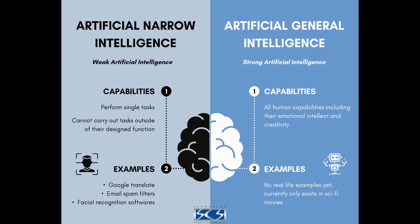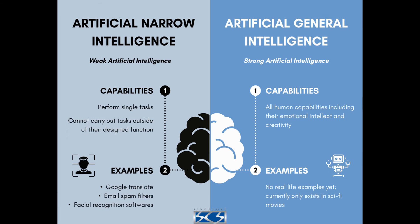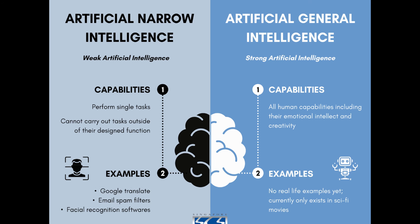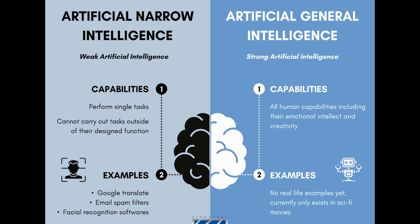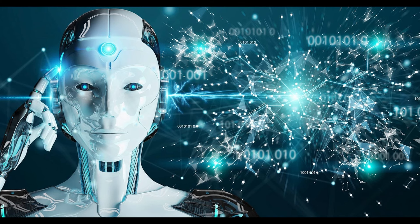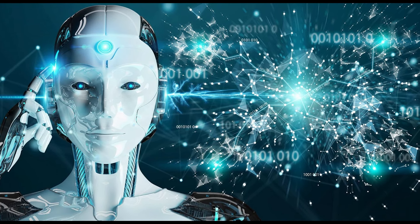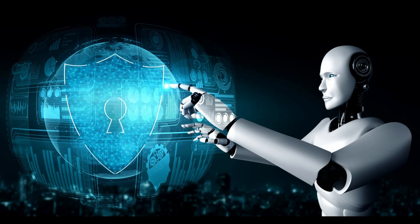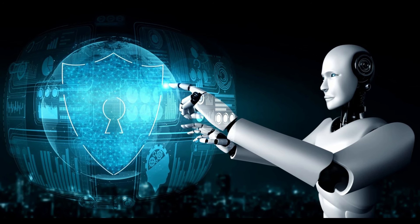AGI represents the hypothetical attainment of human-level intelligence by AI systems. AGI would possess the ability to understand natural language, learn from experience, and exhibit creativity and problem-solving skills. Research in AGI focuses on developing AI systems capable of generalizing knowledge across domains, reasoning, and understanding context. Achieving AGI remains a long-term goal, requiring breakthroughs in areas such as unsupervised learning and common-sense reasoning.